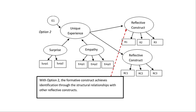The other option to address identification is through structural paths. In this case, I still need at least two paths off of the higher-order construct, pointing to reflective constructs in the conceptual model. However, every time I've used this option instead of the MIMIC model, it completely blows up my model fit and structural paths become problematic — because it's trying to assess identification through actual structural paths to other constructs. So I don't encourage option two; option one — the MIMIC model — is far better, though it does require planning ahead.